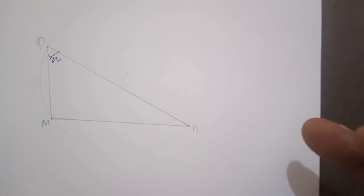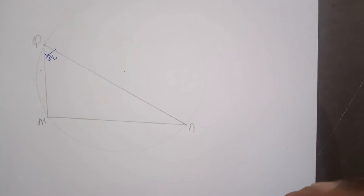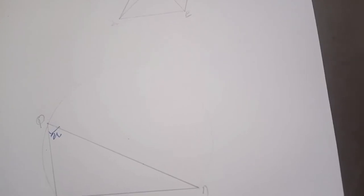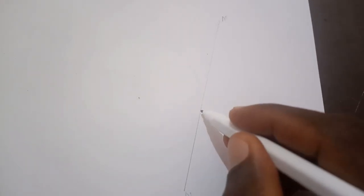Another thing we need to note, because we'll be using it in explaining the theorems, is a tangent. When we say a tangent to a curve or a tangent to a circle, what does it mean? A tangent is just a straight line drawn to touch a circle at one point. So taking this circle for instance, the line MN is a tangent to this circle because it is a straight line that touches the circle at the point P. When a straight line touches the circle at any point along the circumference, we say that line is the tangent to the circle.